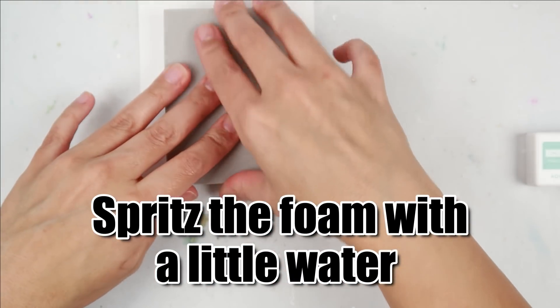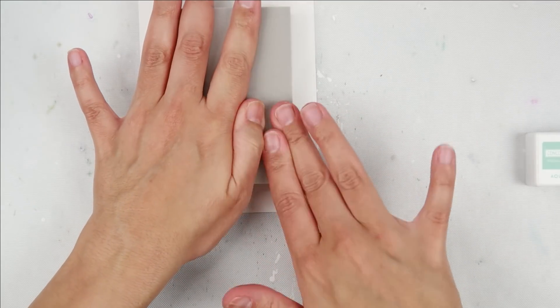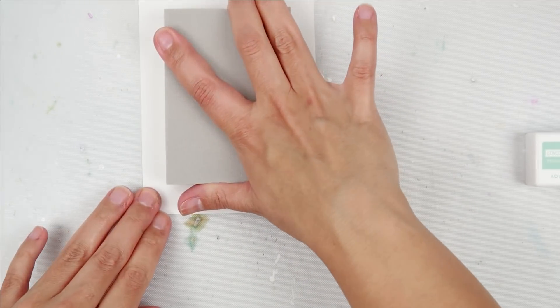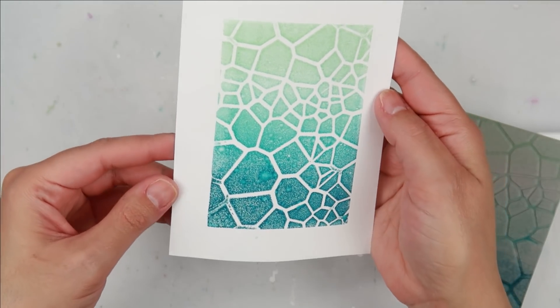I spritzed the foam with just a little bit of water. Now I can take my inked up foam and use it as a stamp. This is such a great way to get more use out of your favorite stencils. And look at that organic texture you get. So cool.